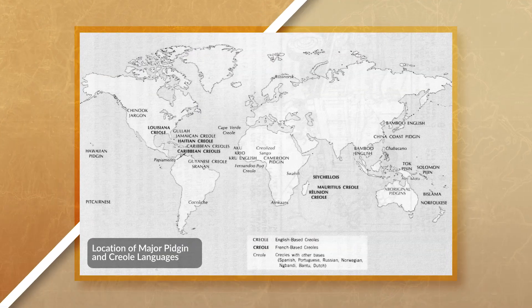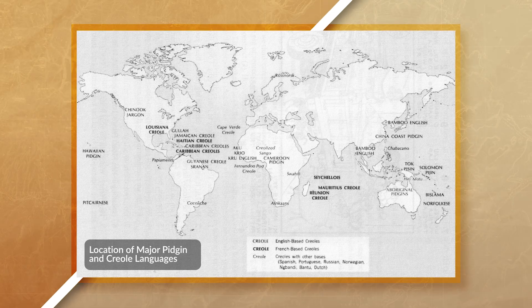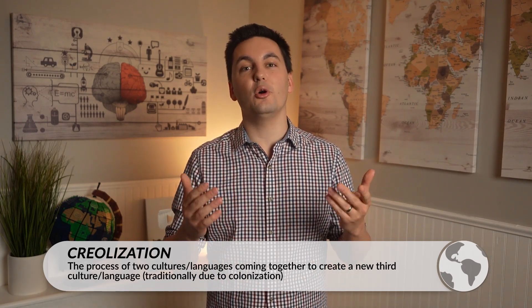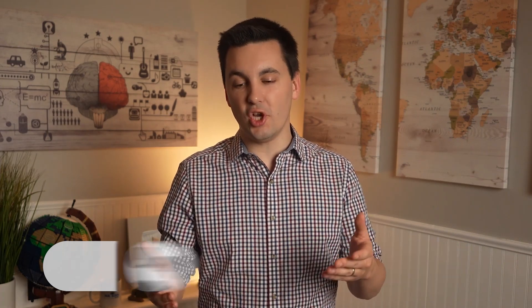We can see this when looking at the first Spanish settlers in the Caribbean or French settlers in Louisiana. This migration of people from the Old World to the New World eventually led to the creation of a new ethnic group made up of different cultural and linguistic backgrounds — these people became known as the Creole people. This process of two cultures coming together to create a new third culture is referred to as Creolization. Originally, Creolization was used when talking about linguistics, but over time it has expanded to include other cultural aspects as well.